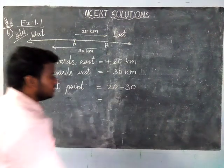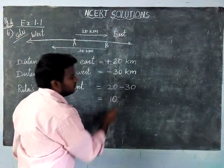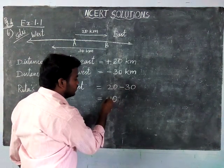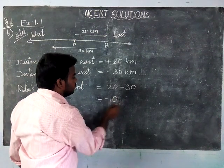Difference between 30 and 20 is equal to 10. The greatest number is 30, in front of 30 the minus sign is there, so minus 10.